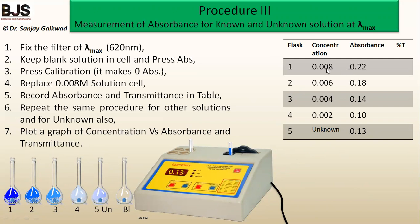The recorded absorbance values are: 0.08 M → 0.22, 0.06 M → 0.18, 0.04 M → 0.14, 0.02 M → 0.10, and unknown → 0.13. After measuring absorbance, pressing the transmittance button on the same solution immediately gives the percentage transmittance. Transmittance values are recorded for all known concentrations and the unknown solution in the same manner.